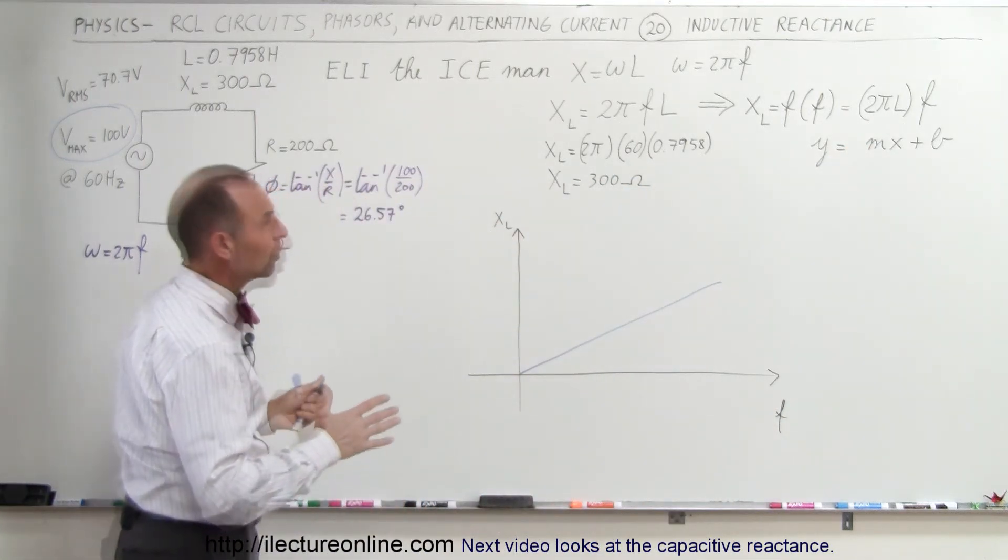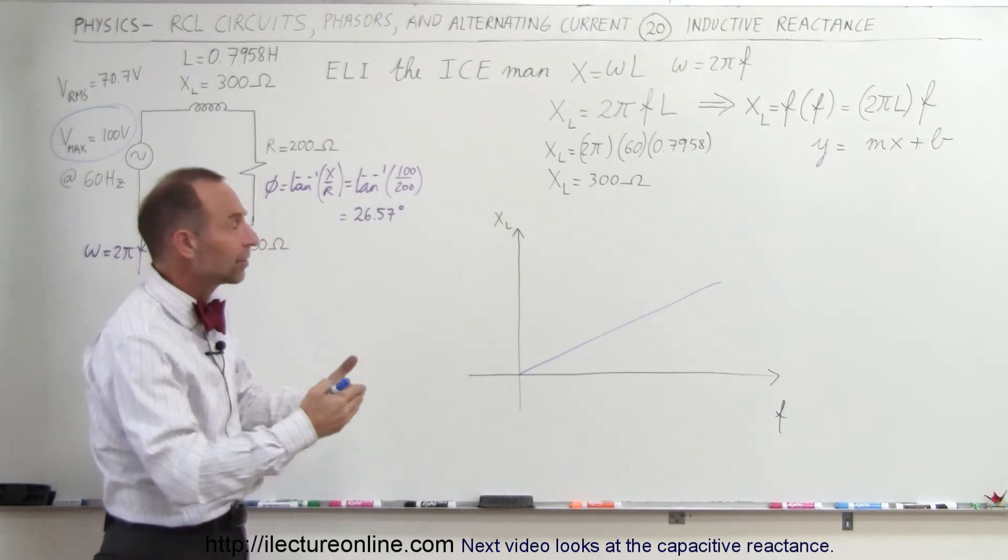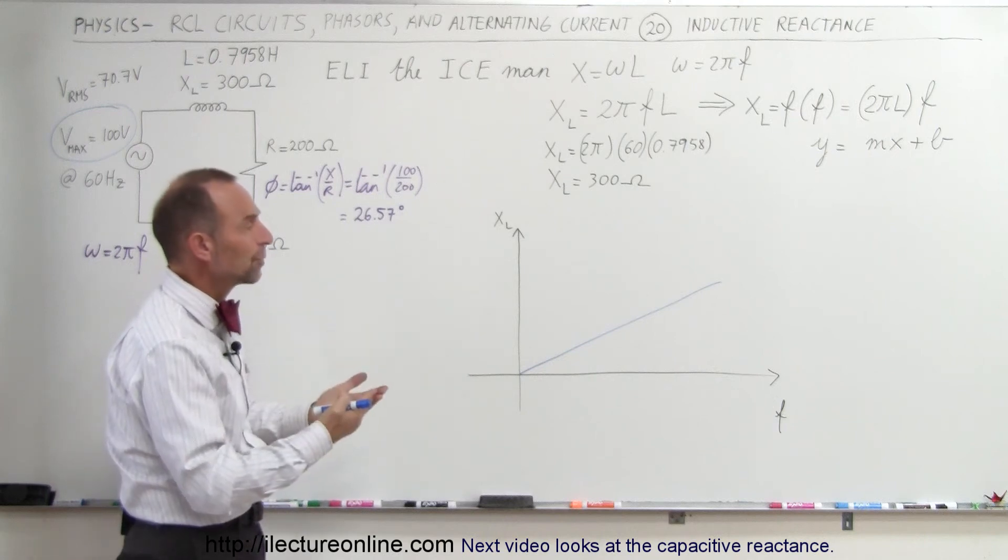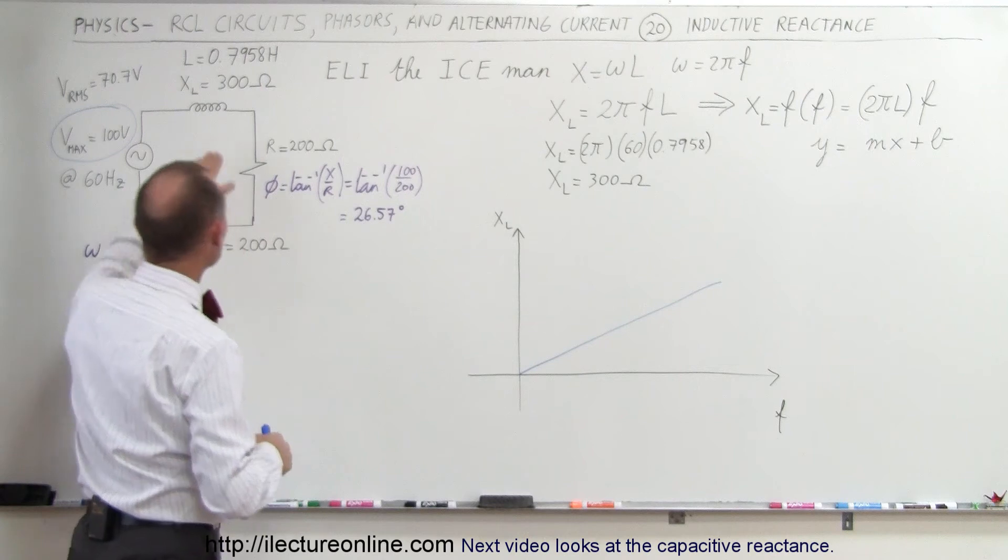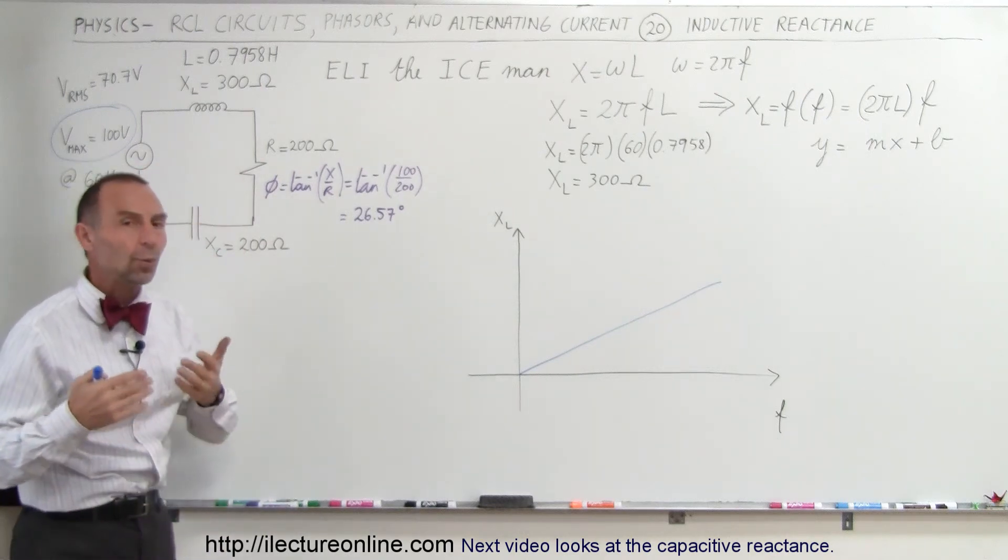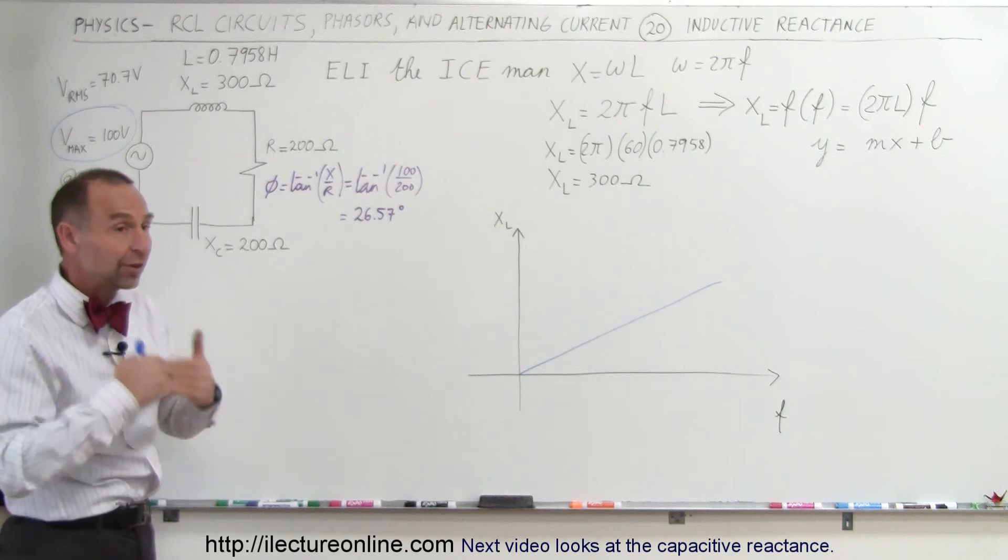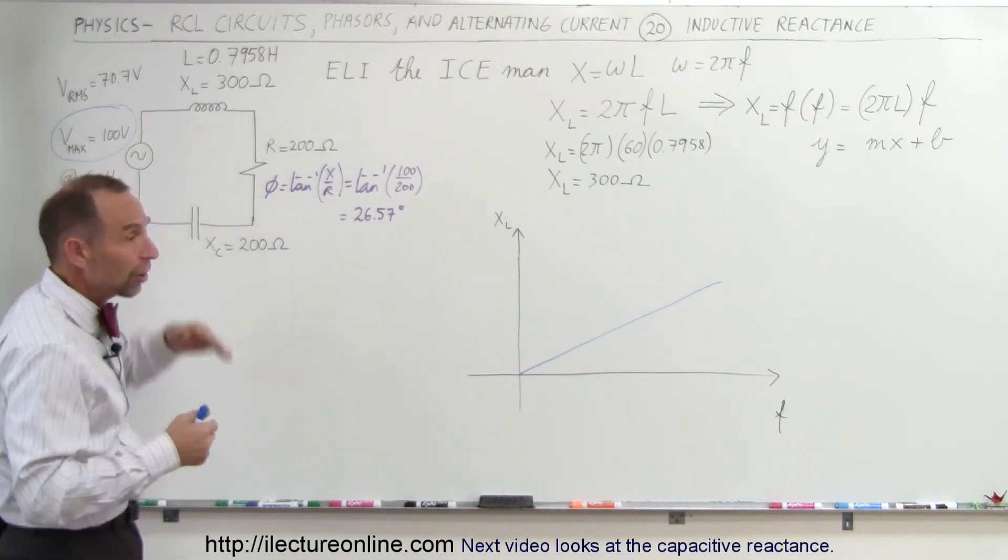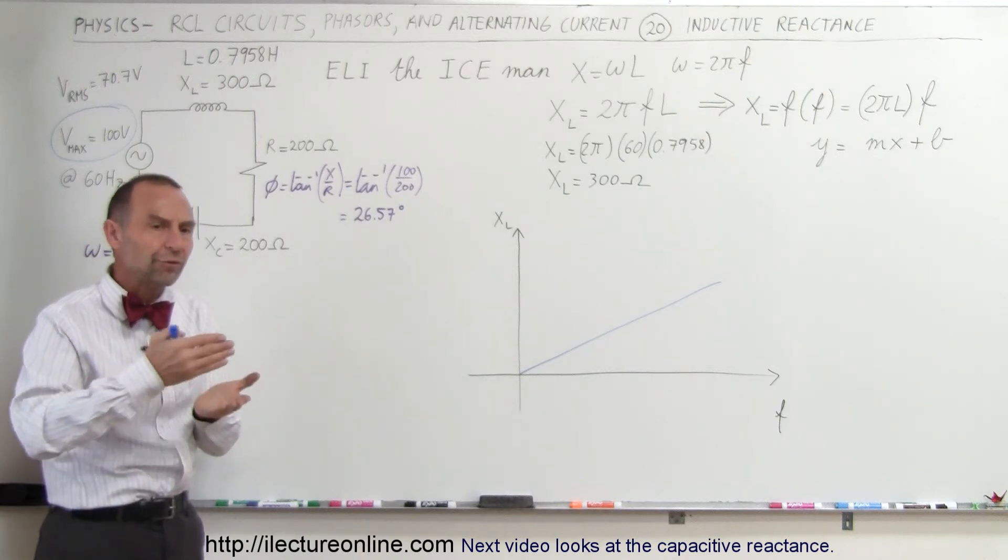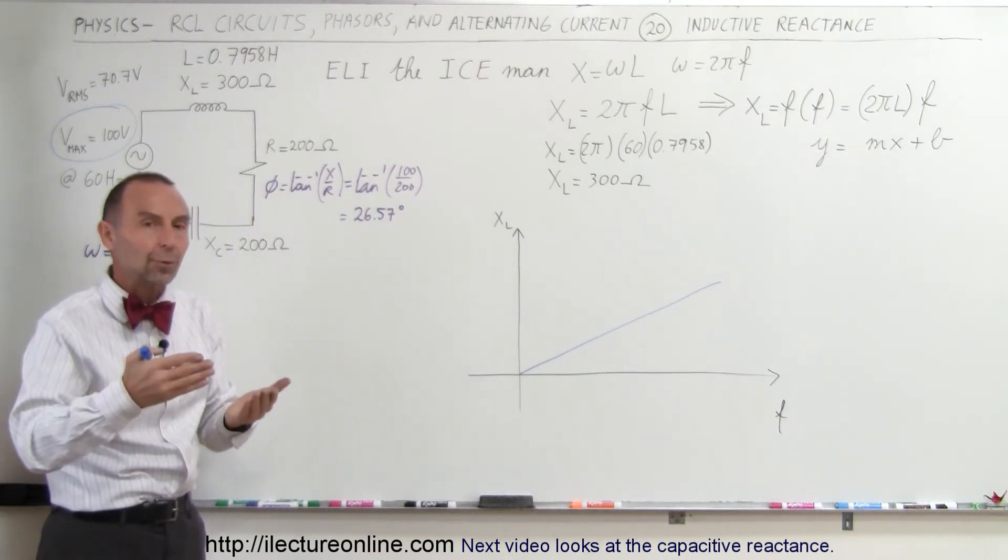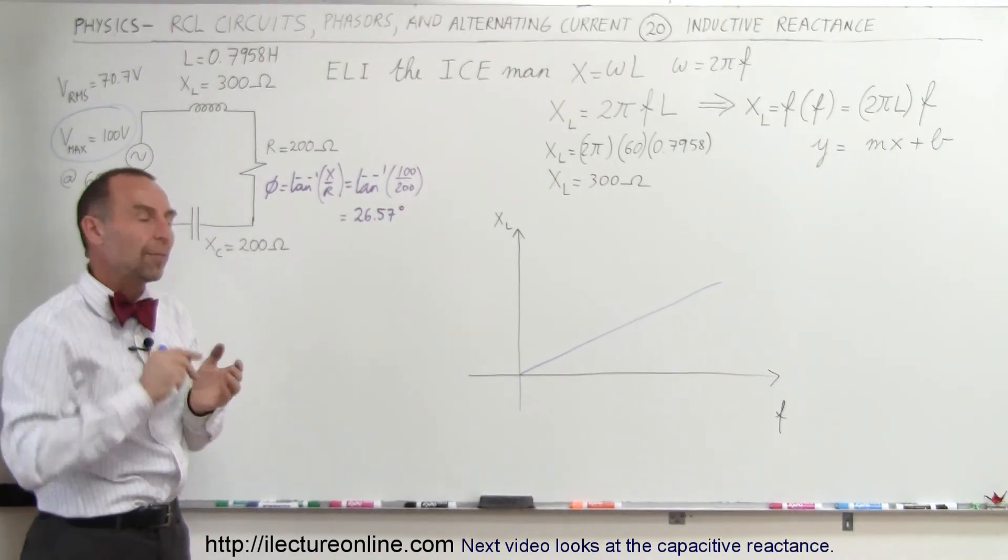Alright, so it's simply a linear function. Double the frequency, double the reactance. Triple the frequency, triple the reactance. So the relationship is simply a linear relationship. And just to summarize, why does an inductor have a larger reactance when the frequency goes up? Well, it turns out an inductor opposes a change in the current. As the current changes more frequently at a higher rate, then of course the inductor will oppose that higher rate more so, and the reactance goes up.